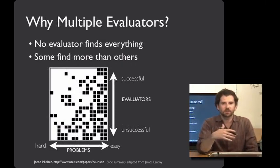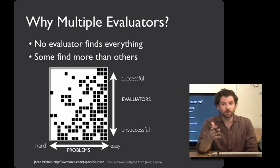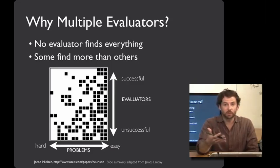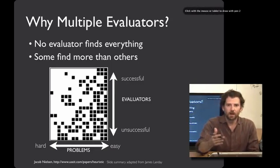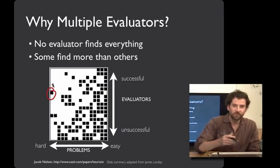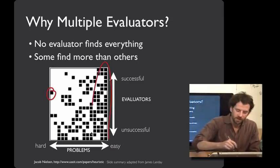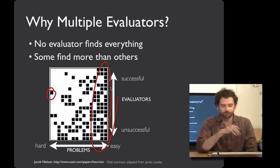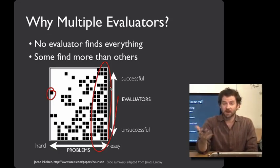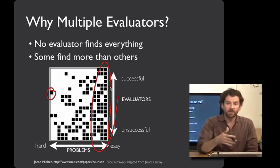Let's talk about why you might want to have multiple evaluators rather than just one. The graph on the slide is adapted from Jacob Nielsen's work on heuristic evaluation. Each black square is a bug that a particular evaluator found. An individual evaluator represents a row of the matrix, and there are about 20 evaluators in this set. The columns represent the problems — some were found by relatively few evaluators, others by almost everybody. We can call the stuff on the right the easy problems and the stuff on the left hard problems. In aggregate, no evaluator found every problem, and some evaluators found more than others.